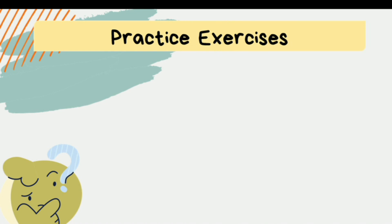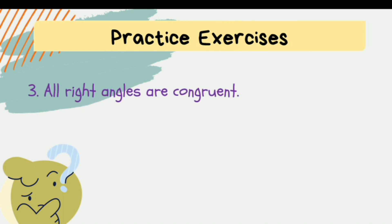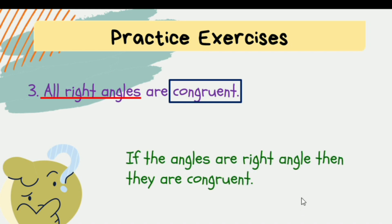Let's have our third exercise. The statement is: all right angles are congruent. It talks about all right angles being congruent. The if-then statement is: if the angles are right angles, then they are congruent. You got it correct.